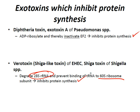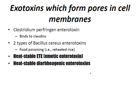Exotoxins which form pores in cell membranes: Clostridium perfringens enterotoxin binds to claudins, which are proteins involved in maintaining intercellular junctions on cell surfaces. That leads to the formation of pores in the cell membrane, which leads to osmotic swelling and lysis — sodium's gradient rushes in, potassium leaks out, chloride and water follow, the cell swells and lyses, causing cell death.